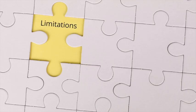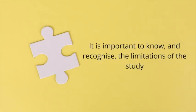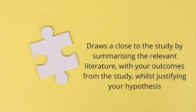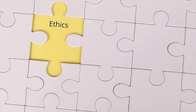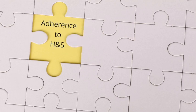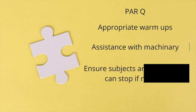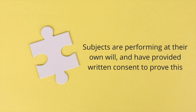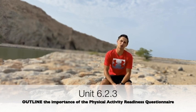We also have the limitations of the study — things important to know and recognize about your study: the strengths, weaknesses, and limits of what is available. We also have a conclusion where you summarize the relevant literature with your own outcomes and results. A couple more things: we have ethics to consider — make sure no alcohol, no blood taking, but other ethical considerations may be relevant. And lastly, adherence to health and safety: taking a PAR-Q, appropriate warmups, assistance with machinery, and getting informed consent from your performers.